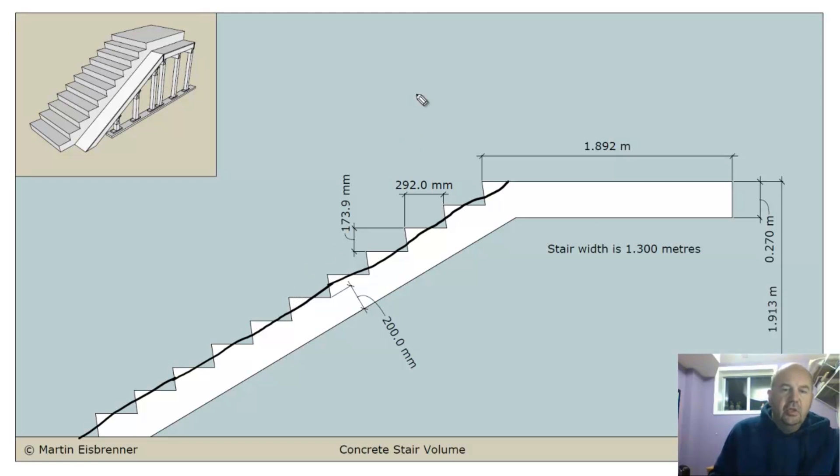And we're going to do a little calculation here. What I'm going to do is I'm going to take the unit of rise, 173.9, divide it by 2, and then add it to the throat thickness, 200 millimeters.